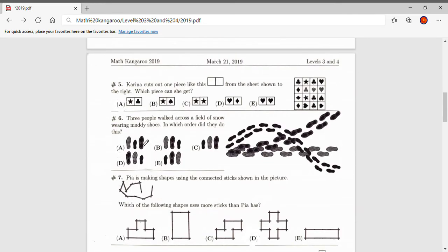Number five. Karina cuts out one piece like this from the sheet shown to the right. Which piece can she get? So you start with the first one, A. So we look for stars and we get one star here, one star here. This star is tilted so we can't even use it. But we can see that the figures form like this. So A can be made. And eventually after you go through all of the choices, you'll find out that none of them can also be made and only A can be made.